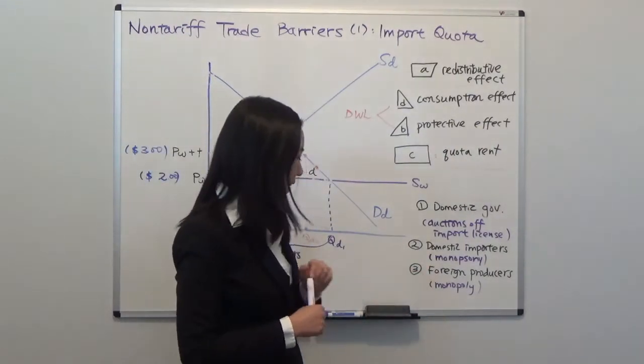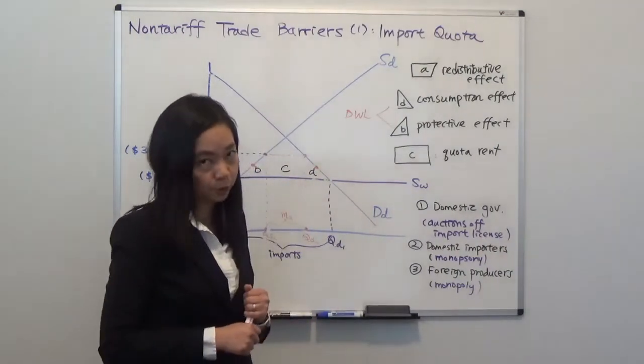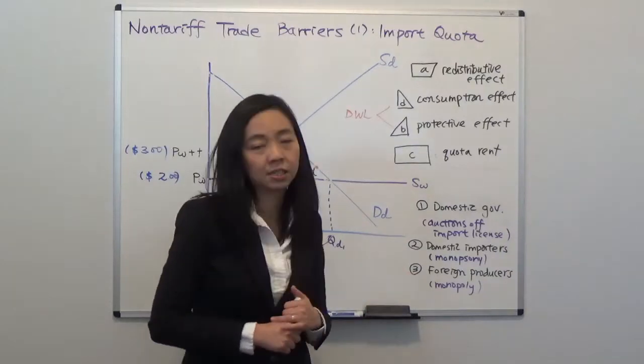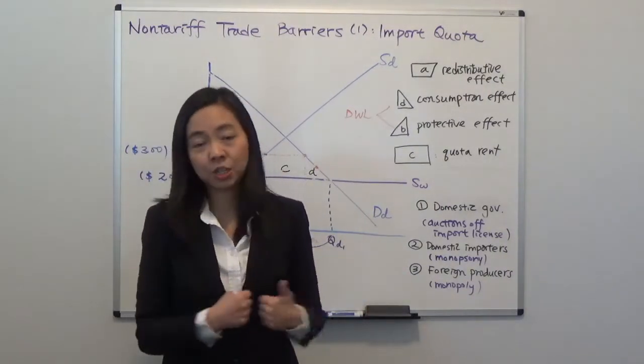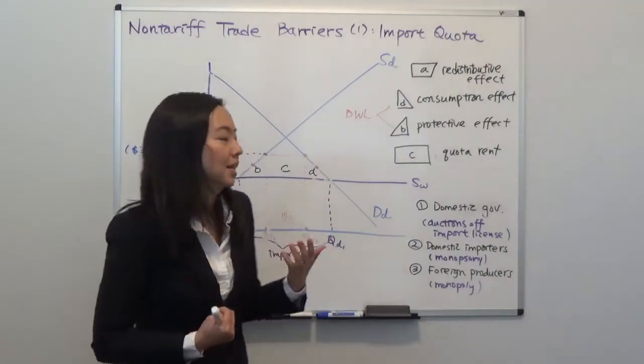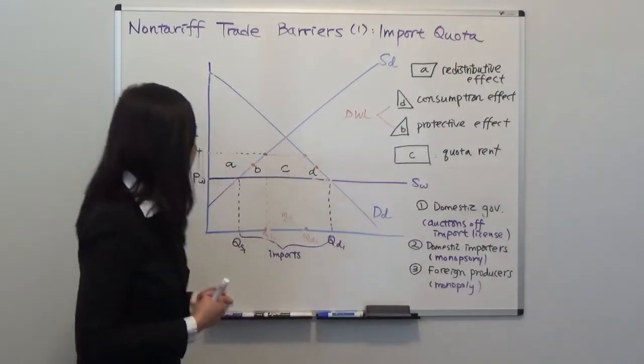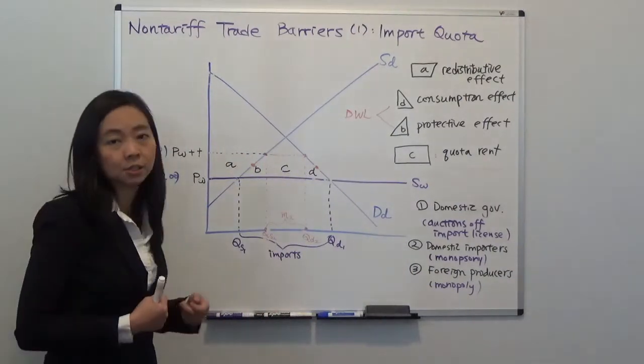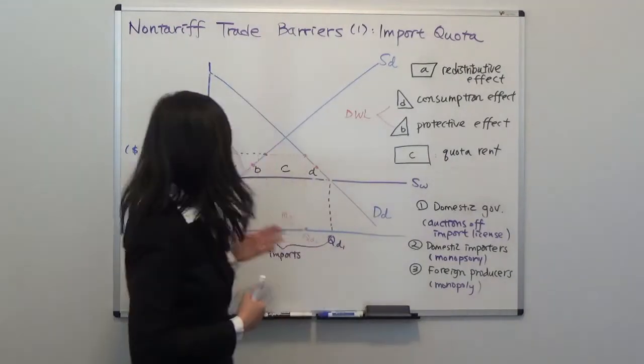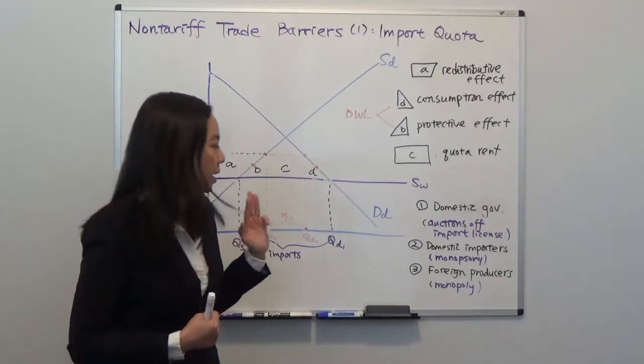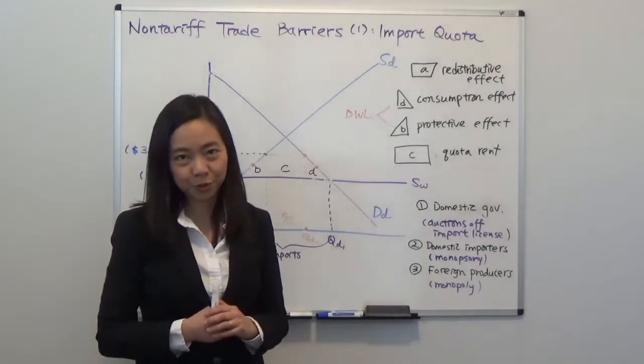And the third case is this. If the foreign producers, they collude together, so the European cheese producers, they collude together as a monopoly, and the US grocers, they compete against each other trying to buy this cheese. In that case, the foreign producers, the European cheese makers, they're going to get the quota rent. They're going to sell the cheese to the US importers at $3.